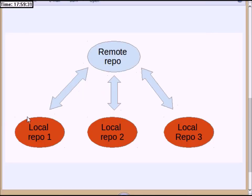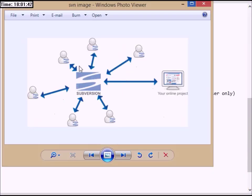But in Git, if a programmer makes an error in the index.html or login page, they can access the local repository and modify the code. You can modify it in the central repository and resolve the error easily, because Git tracks all previous versions of the file.